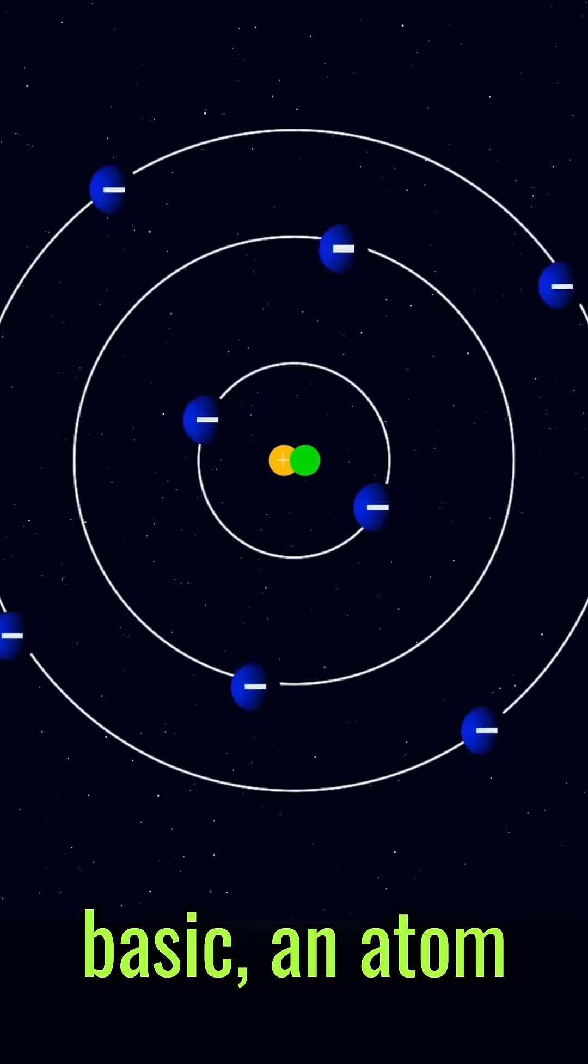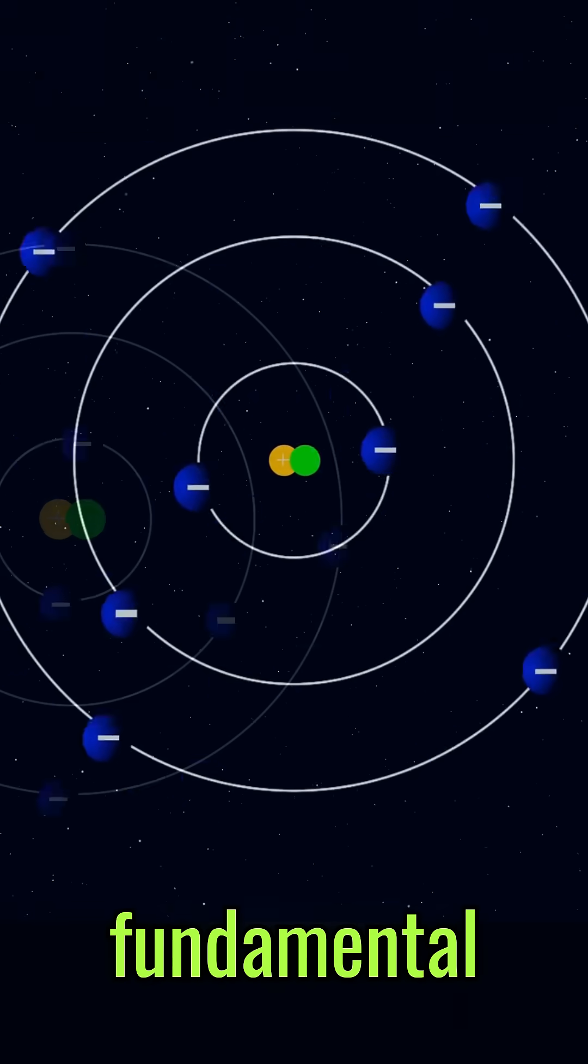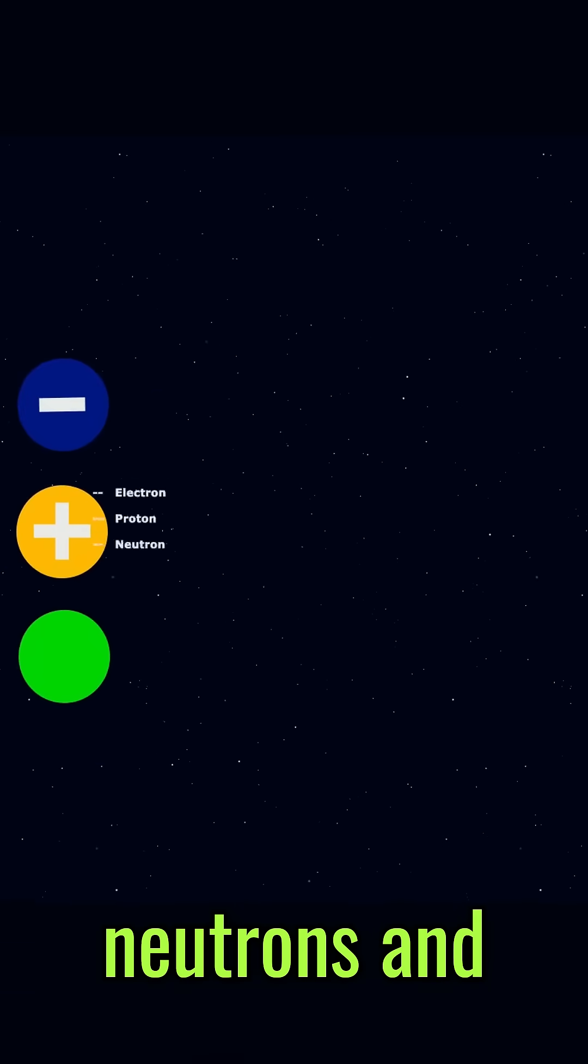The atom. At its most basic, an atom consists of three fundamental particles: protons, neutrons, and electrons.